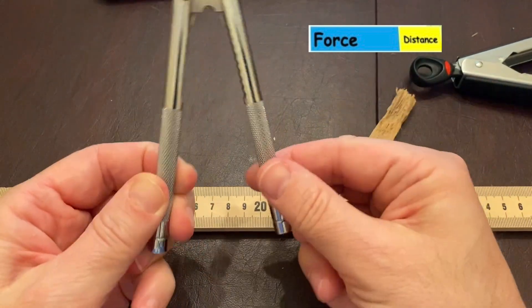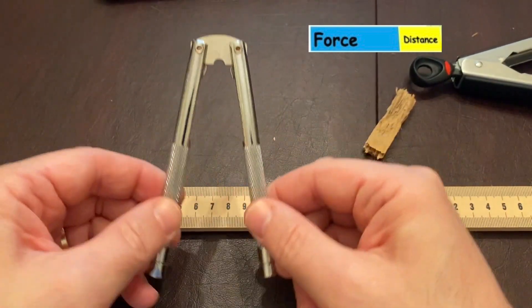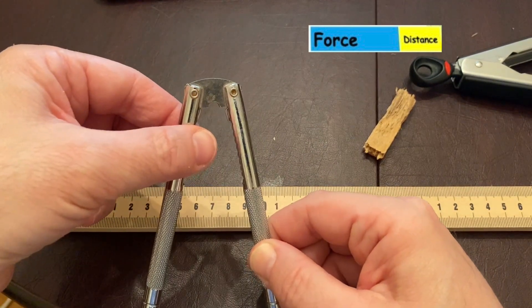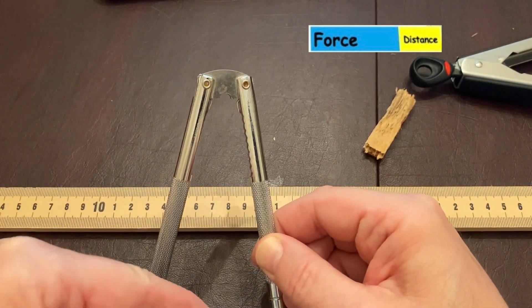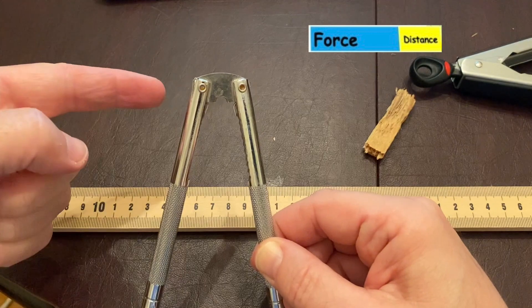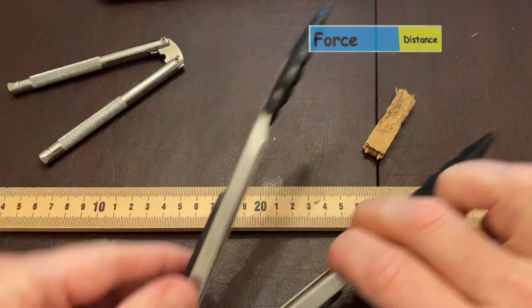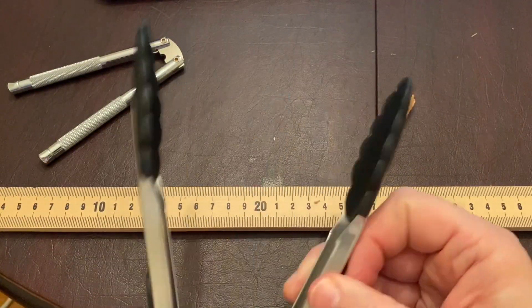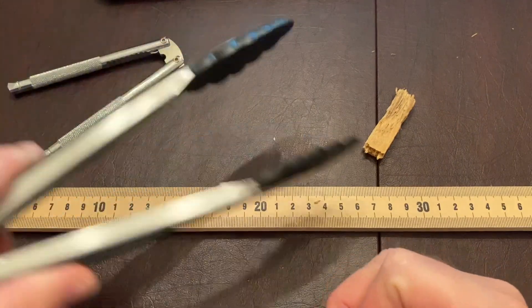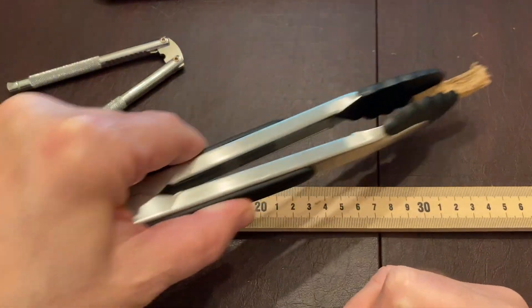So this machine decreases the distance because your fingers move a greater distance than the inner part does. So if this one decreases the distance, that's going to increase the force. And this one increases the distance, so it decreases the force. But they're both useful in their own ways.